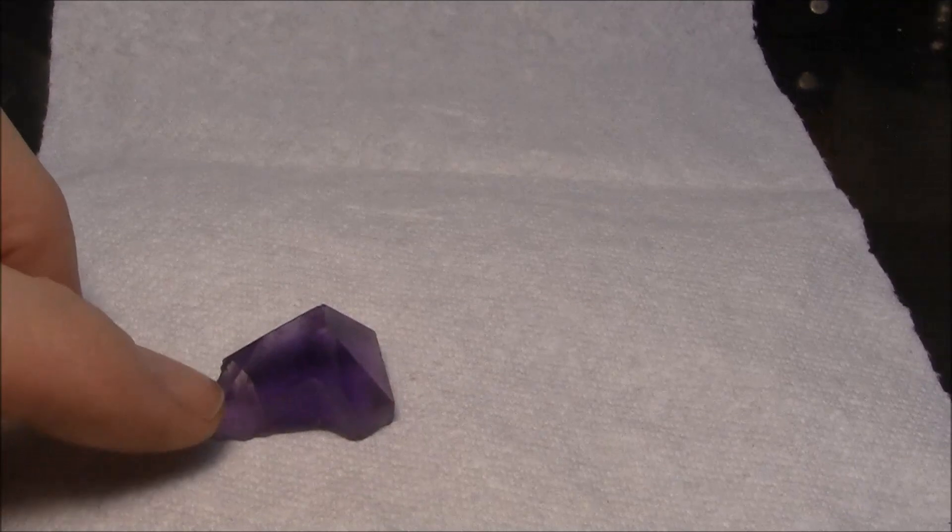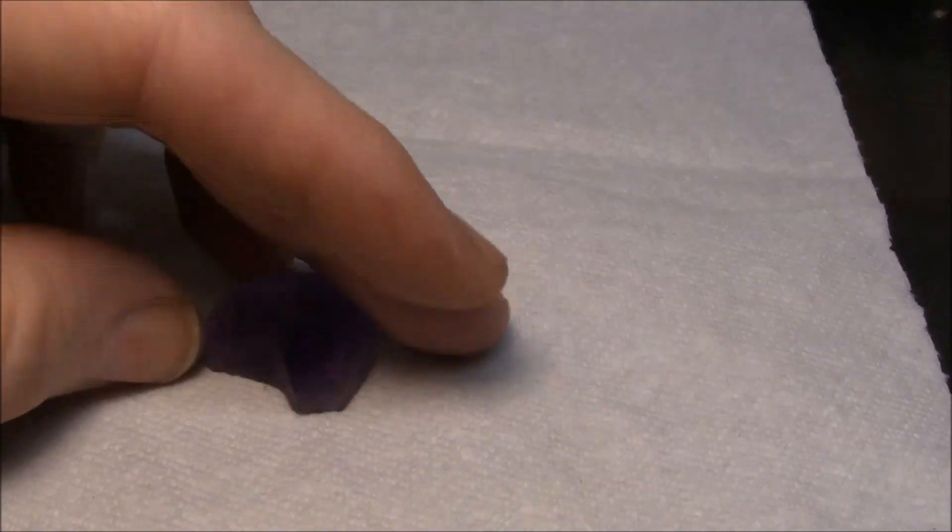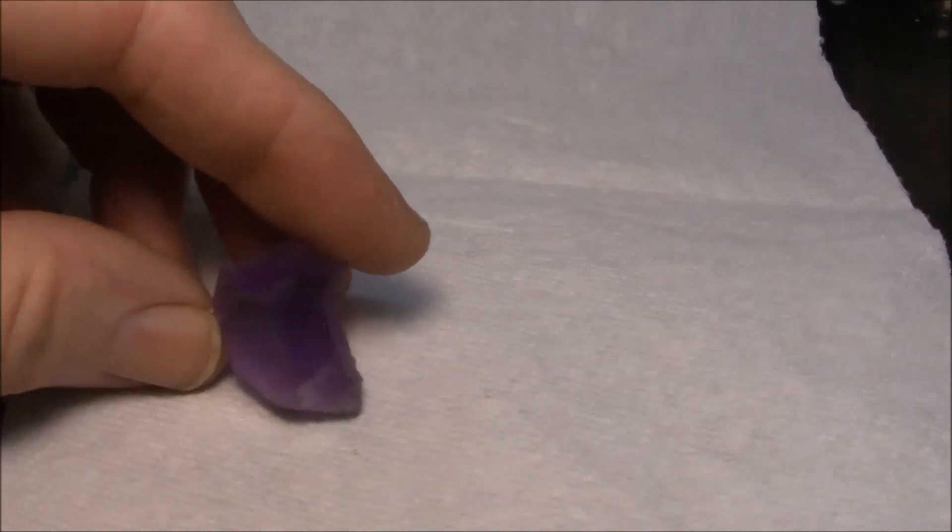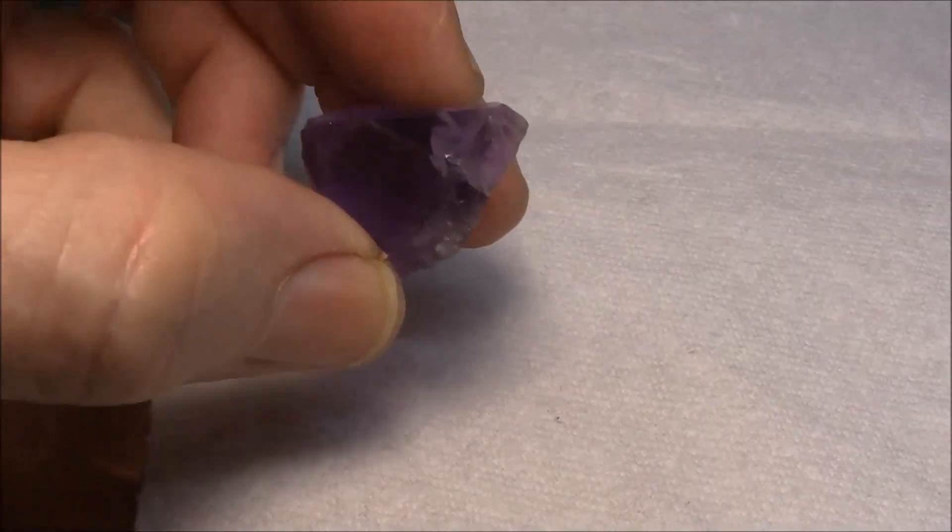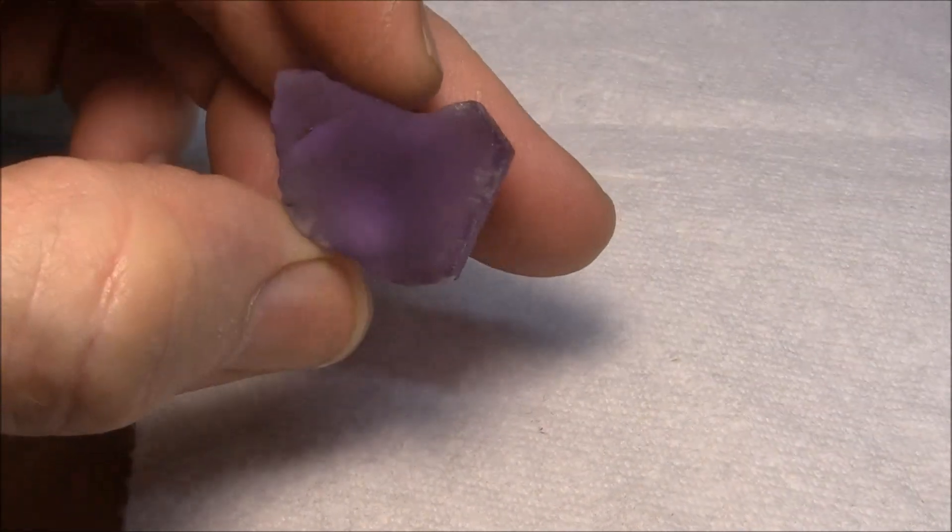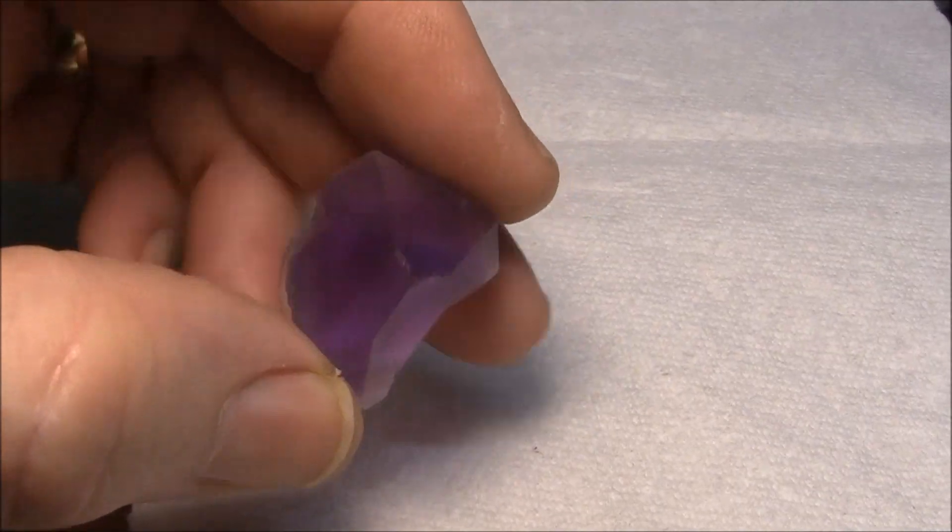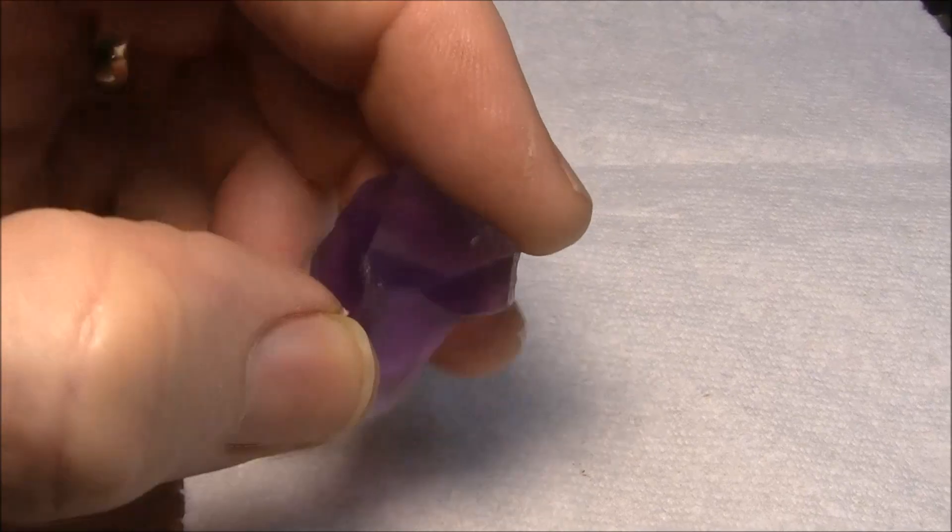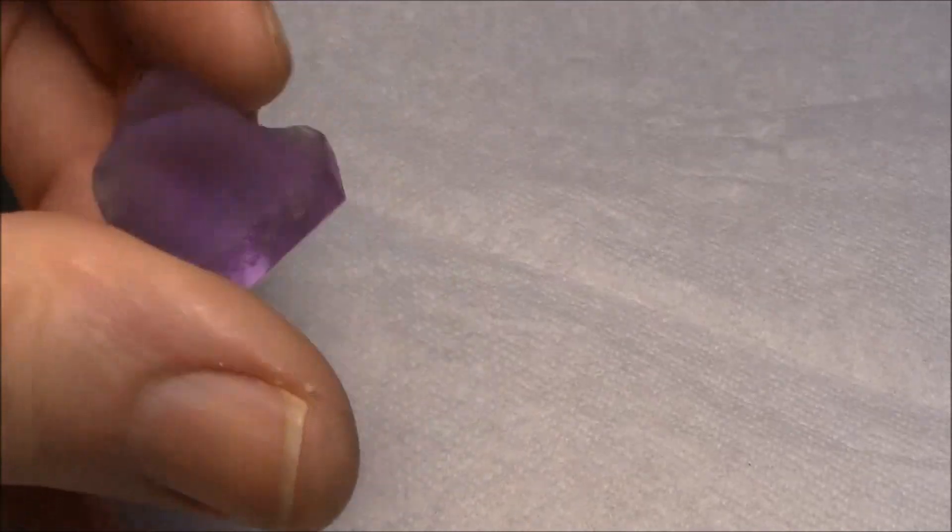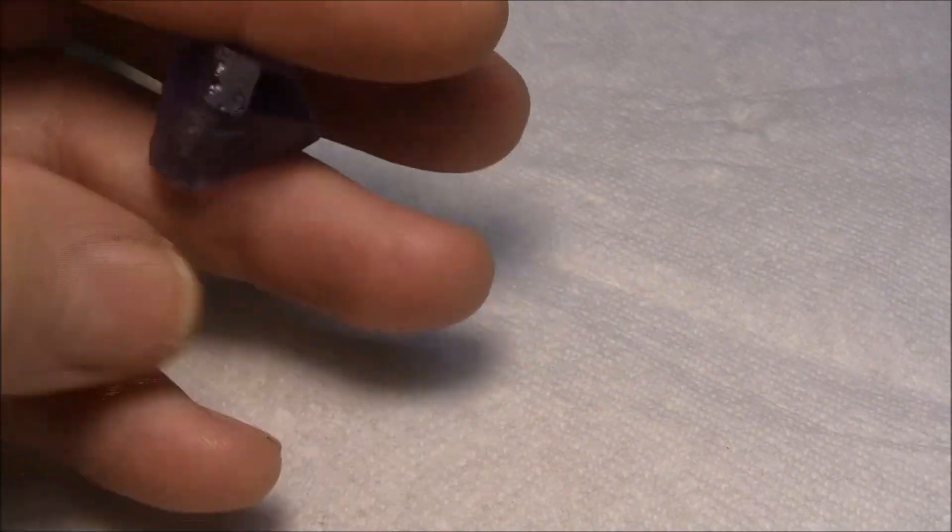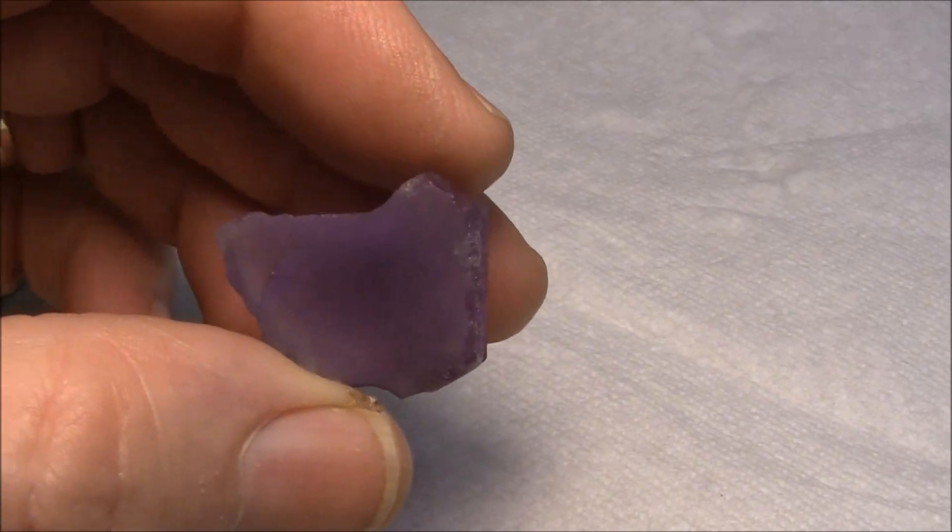And it has inclusions in this area, so that's not usable. I'm going to look at it some more and decide my plan of action and take it to the grinding machine. I'm thinking it might make a square to rectangular shaped stone.